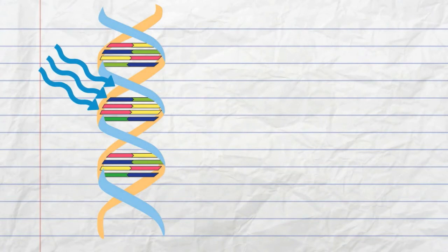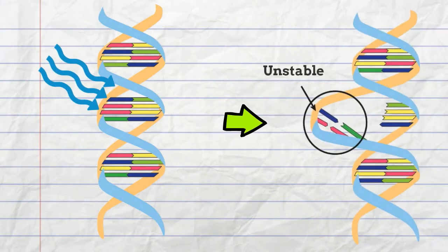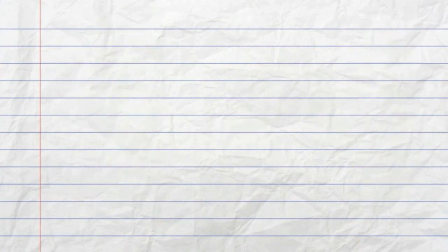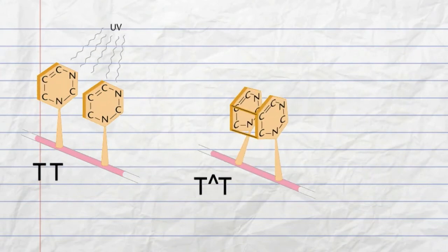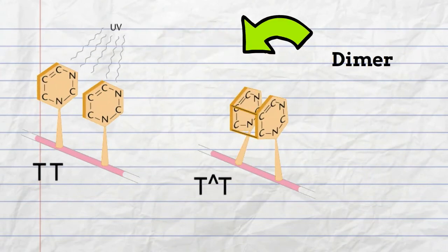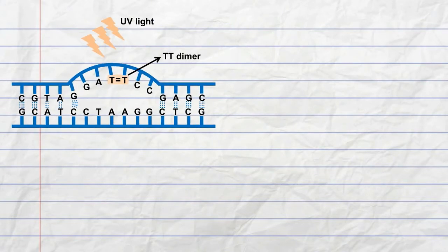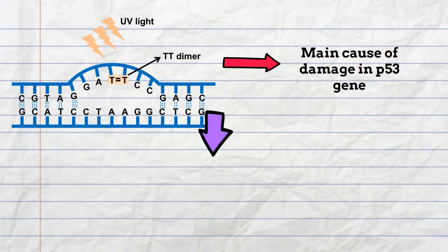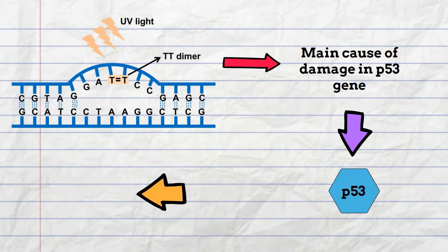UV light is absorbed by a bond in thymine and cytosine bases in DNA, which causes the bond to break open, making it unstable and more likely to react with a neighboring base. When it reacts and forms a bond with a neighboring base, it is referred to as a dimer.